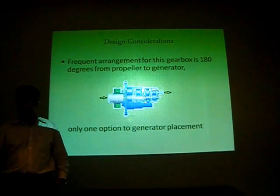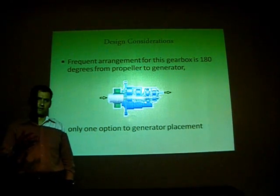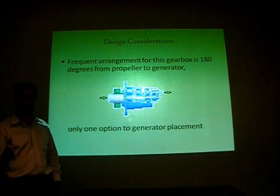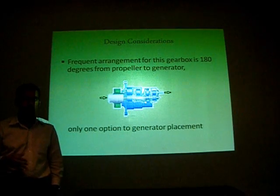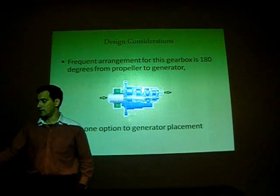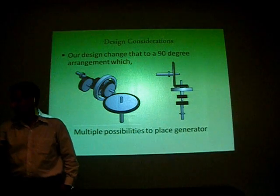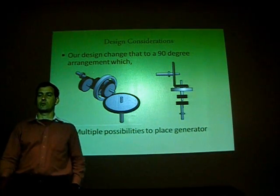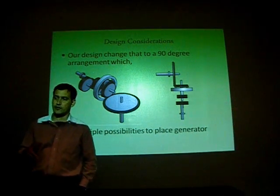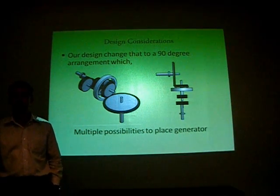One of the most important parts of our gearbox is the improvement we made. Regularly, the arrangement for gearboxes is set at 180 degrees from propeller input to output generation — a straight shaft from one side to the other. The generator on these towers is actually located on top of the towers, making it difficult or dangerous to maintain due to the altitude. Our gearbox, on the other hand, brings a change of 90 degrees. We acquire the power from the propeller and send it down the tower where the generator can be located, making it simpler for technicians to access and any replacement far easier than going up the tower.